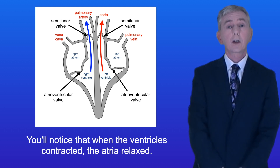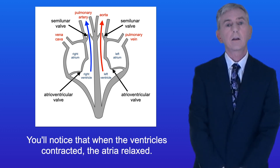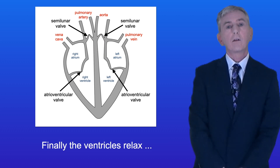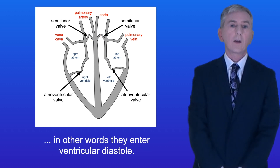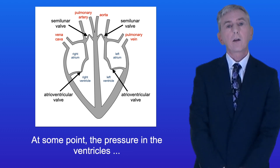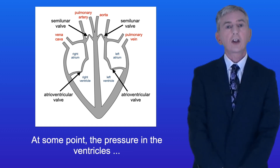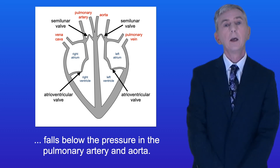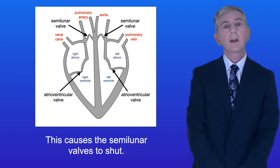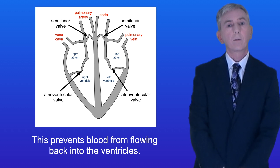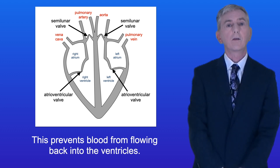You'll notice that when the ventricles contracted the atria relaxed. Finally the ventricles relax, in other words they enter ventricular diastole. At some point the pressure in the ventricles falls below the pressure in the pulmonary artery and aorta, causing the semilunar valves to shut, which prevents blood from flowing back into the ventricles.